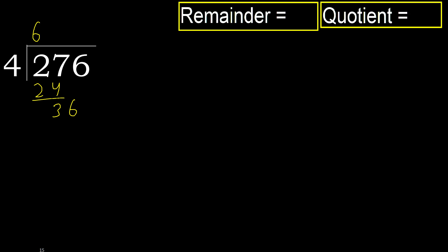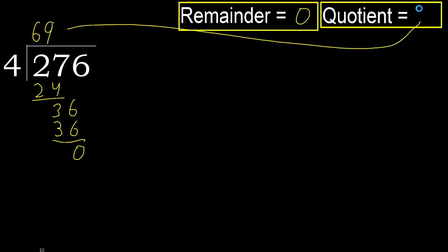Next, bring down 36. 4 multiplied by 9 is 36, which is not greater. Subtract — there is no remainder, therefore finish. 276 divided by 4 is 69.